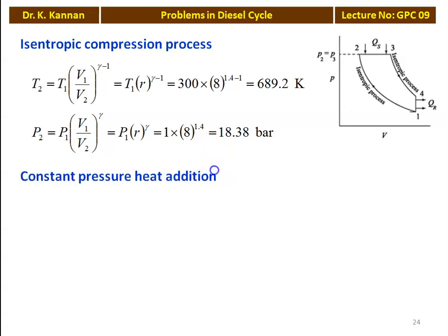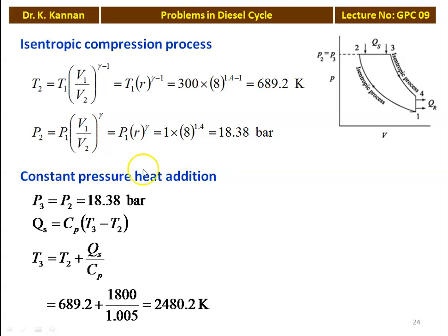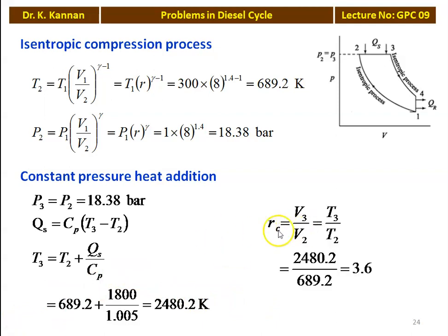For the constant pressure heat addition process, P3 equals P2 equals 18.38 bar. Heat supplied Qs equals Cp into (T3 minus T2). From this equation, T3 equals T2 plus Qs divided by Cp: 689.2 plus 1800 divided by 1.005 equals 2480.2 Kelvin. We calculate the cutoff ratio Rc equals V3 by V2, which equals T3 by T2: 2480.2 divided by 689.2 equals 3.6.